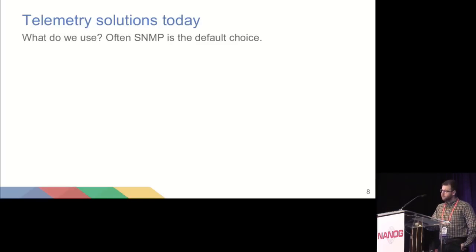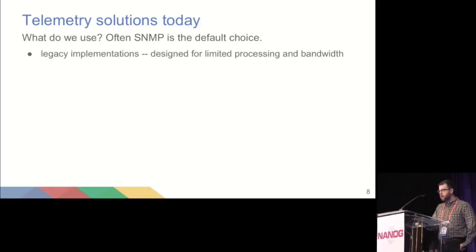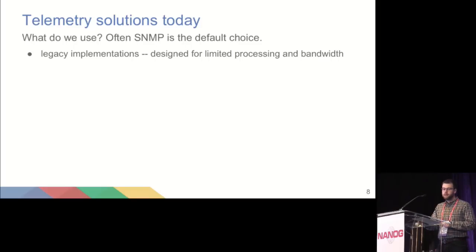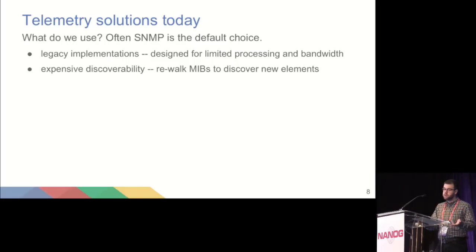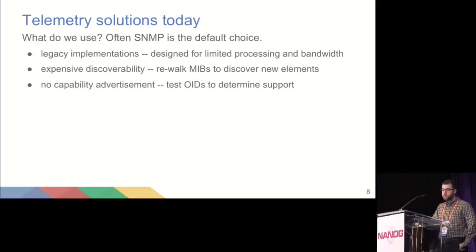Telemetry solutions today — obviously SNMP is the default choice. You turn a device up and 99% of the time people will be managing it with SNMP. It is a relatively old protocol. If you go back and read some of the original protocol specs, some of the core design choices were made to deal with the very limited processing capability of network elements at the time, and also the limited bandwidth available to send data upstream to telemetry endpoints. It's expensive to discover things with SNMP — you put in a new line card, you have to re-walk the device to find the new piece of hardware.